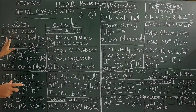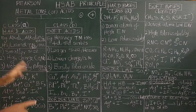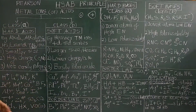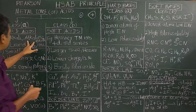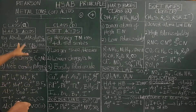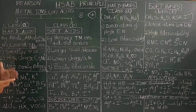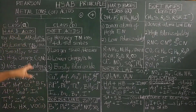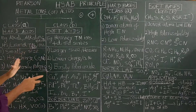Hard acids are alkali metal ions and alkaline earth metal ions — lithium ions, sodium ions, potassium ions, barium ions, calcium 2+. Also included are lighter transition metal ions in the 3D series.